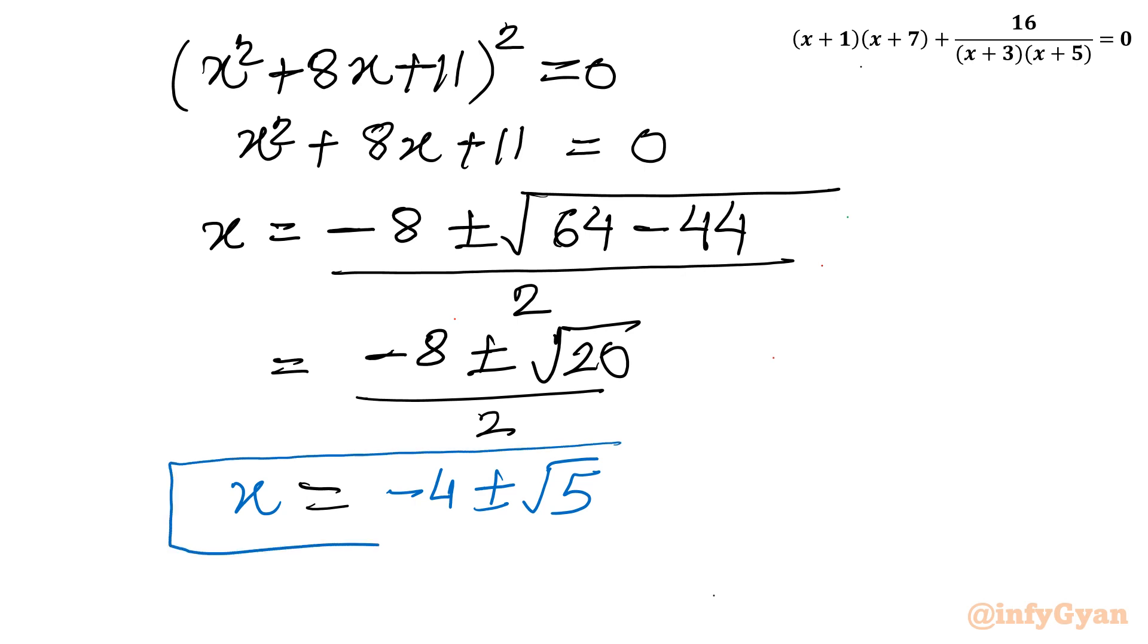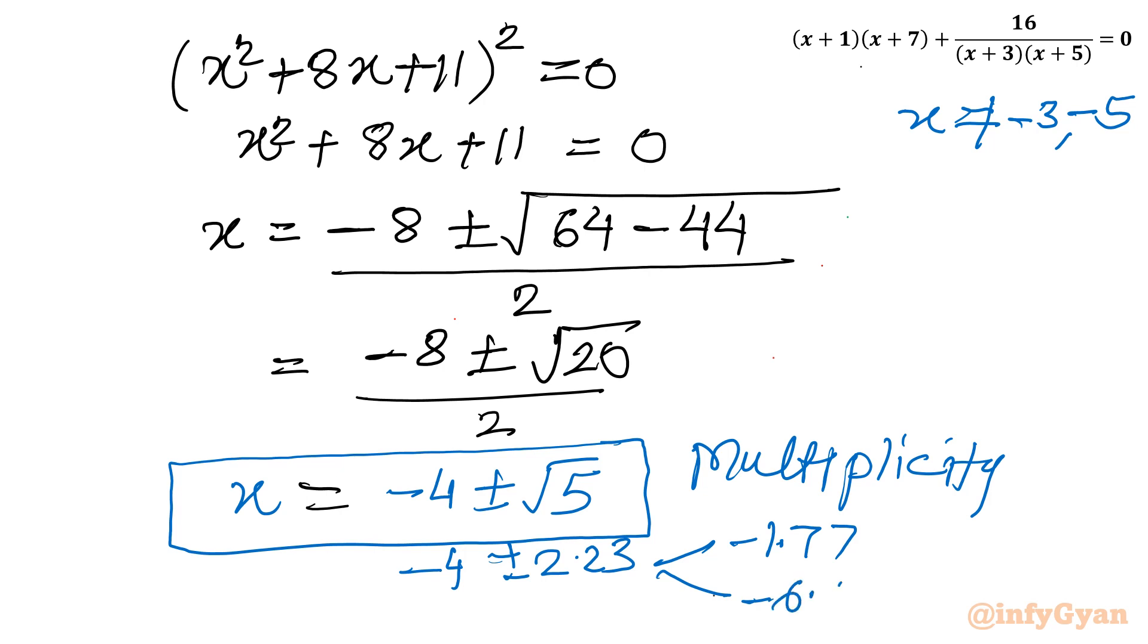So we have got two values. We are solving square root, actually this whole square quartic, so multiplicity 2. There is no restriction on domain. Again, domain was x is not allowed minus 3 and minus 5. If you will see this value is 2.23 and if you add or subtract from minus 4, you will get two answers. One value is negative 1.77 and second value is minus 6.23. So we will accept both the values.